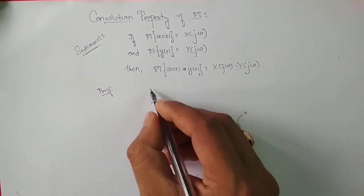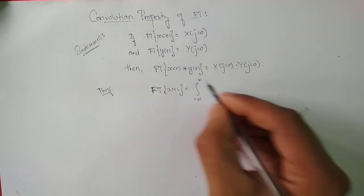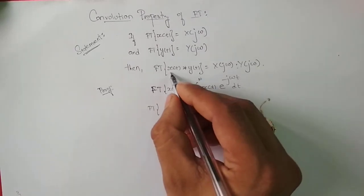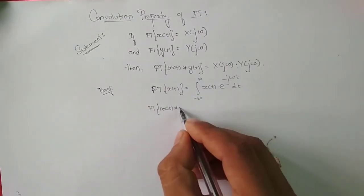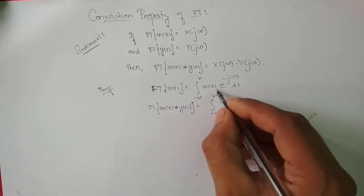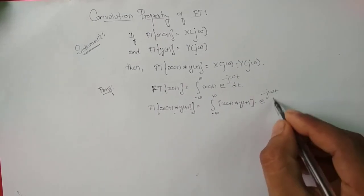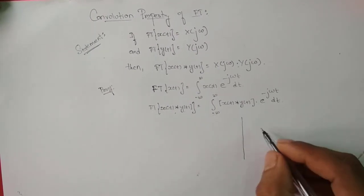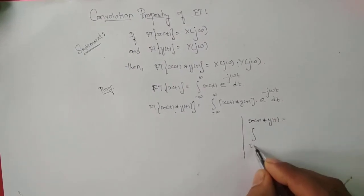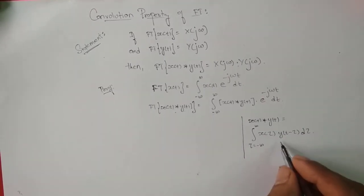From the definition of Fourier transform, the Fourier transform of x(t) is given by integrating t varying from minus infinity to infinity. Instead of writing x(t), we write x(t) convolved with y(t) into e to the power minus jωt dt. We know that x(t) convolved with y(t) is given by integrating τ varying from minus infinity to infinity: x(τ) · y(t − τ) dτ, as per the definition of the convolution integral.